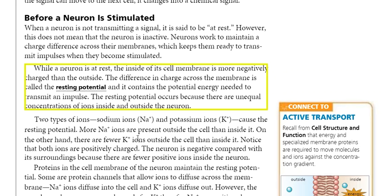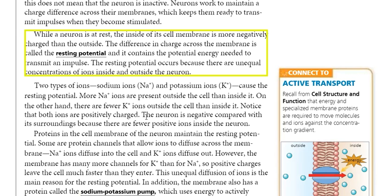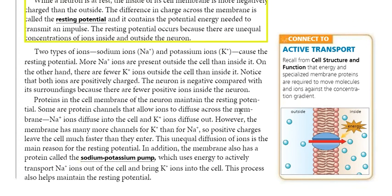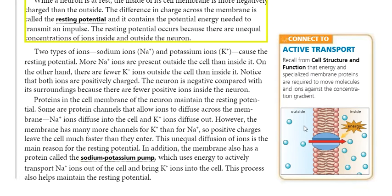Both sodium and potassium ions are positively charged. More sodium ions are present outside the cell than inside, and this is the major reason why the outside of the cell is positive while the inside is negative. Inside the cell we find fewer potassium ions, which contributes to the negative charge on the inside of the cell.